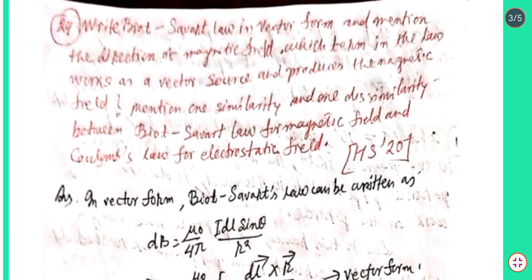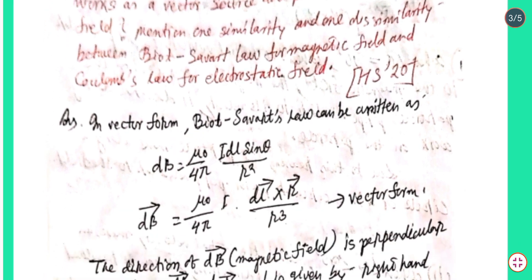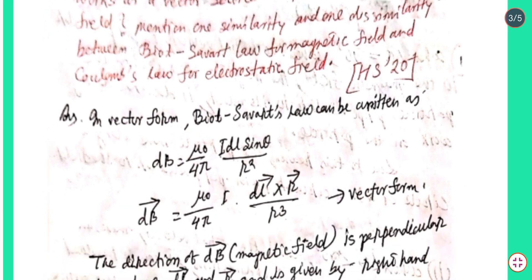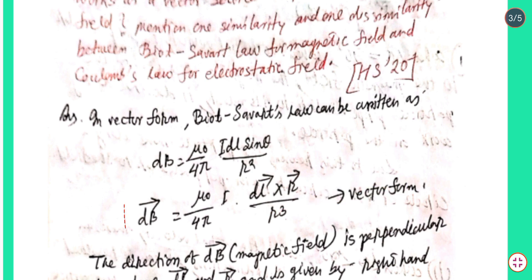In vector form, Biot-Savart law can be written as: dB = (μ₀/4π) × i dl / r², and the full vector form is: vector dB = (μ₀/4π) × i (dl × r̂) / r³. This is the vector form.